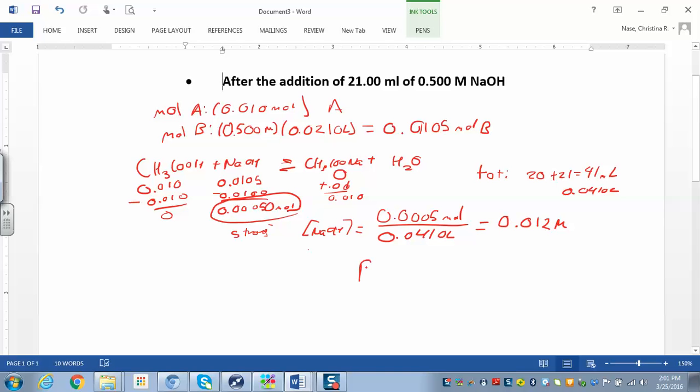So now we can find the pOH. pOH is just negative log of 0.012. pOH ends up being 1.92, and then to get the pH out of that, we're just going to do 14 minus 1.92, and this is 12.08.